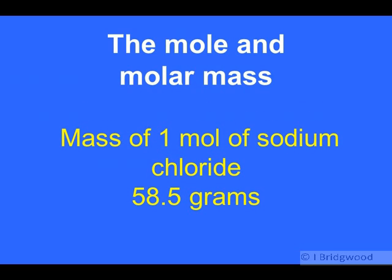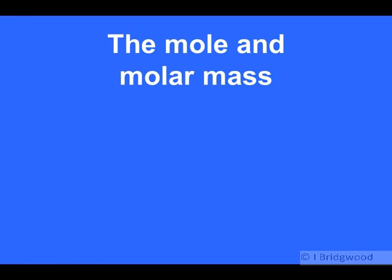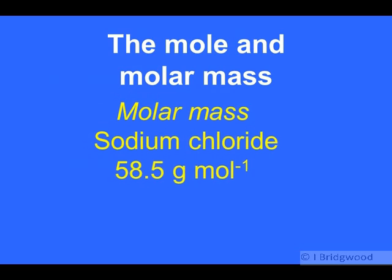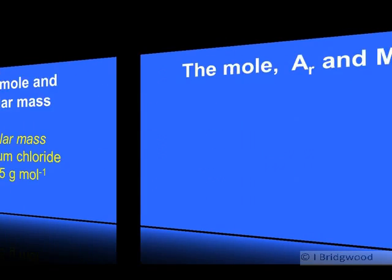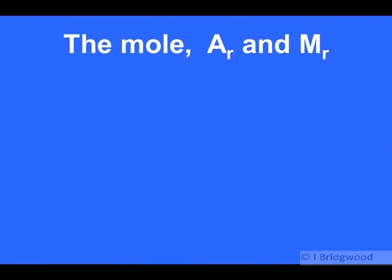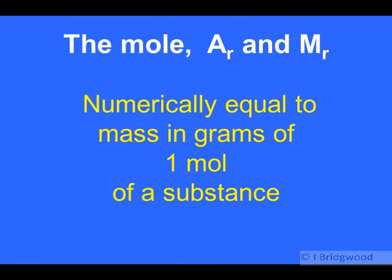So, for example, the mass of one mole of sodium chloride, that has a value of 58.5 grams. So the molar mass of sodium chloride has a value of 58.5 grams per mole. Now, how can we relate this to relative atomic mass and relative molecular mass? You've probably got the idea already. So here, we can relate the mole relative atomic mass and relative molecular mass as it being numerically equal to the mass in grams of one mole of a substance.